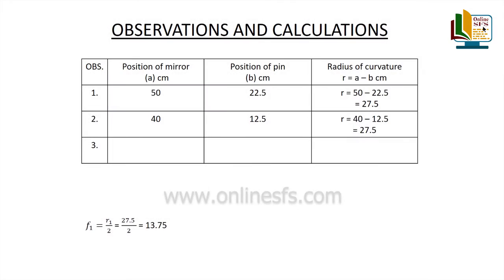Radius of curvature r2 is calculated with the help of the formula a minus b and it is found to be equal to 27.5 cm. Focal length f2 find out karenge with the help of formula f2 equals r2 upon 2 equals 13.75 cm.